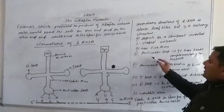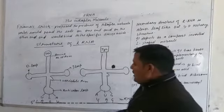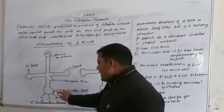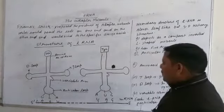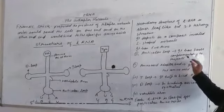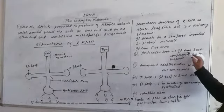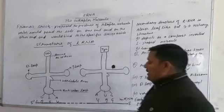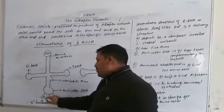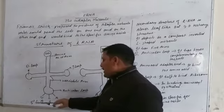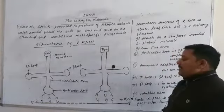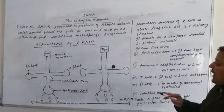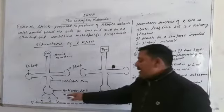First is the anticodon loop. This anticodon loop has bases complementary to the codon.